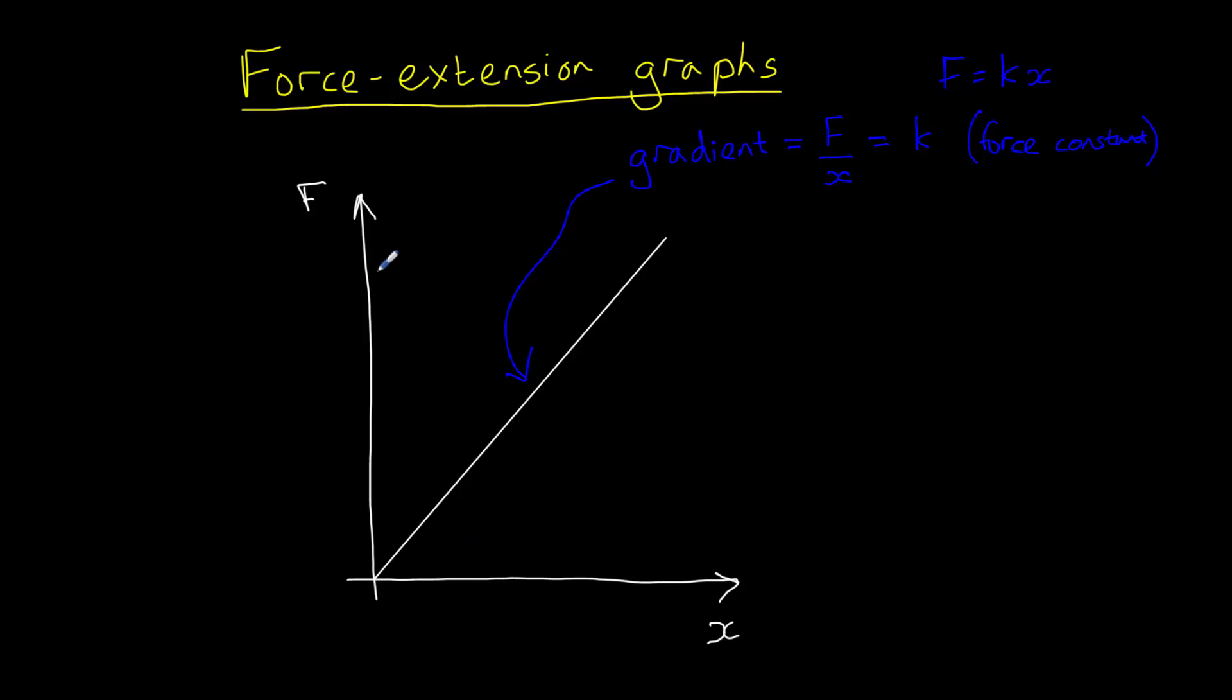So you should be able to look at a force extension graph and determine from the gradient the force constant of the graph. Remember, the force constant is a measure of stiffness. Therefore, a line with a lower gradient, such as this one, will have a lower force constant and therefore a lower stiffness.